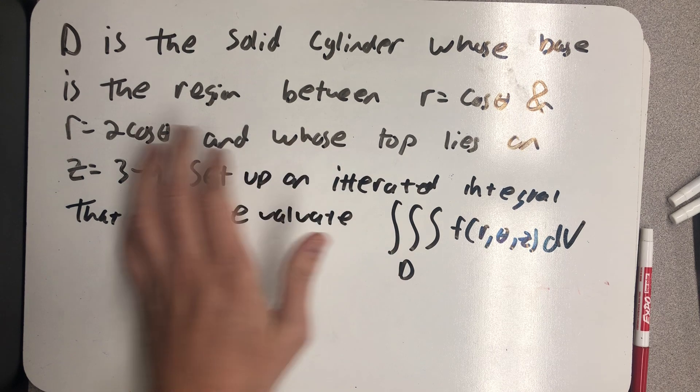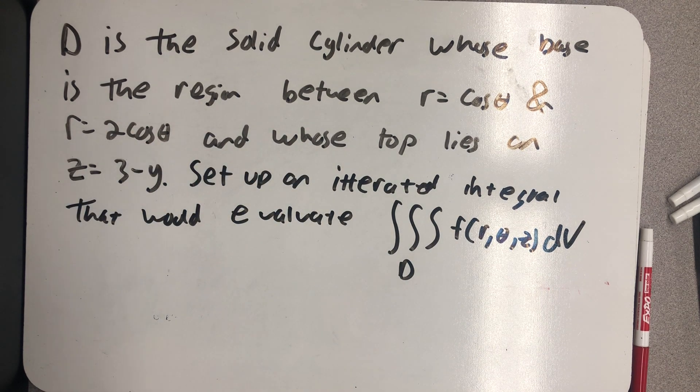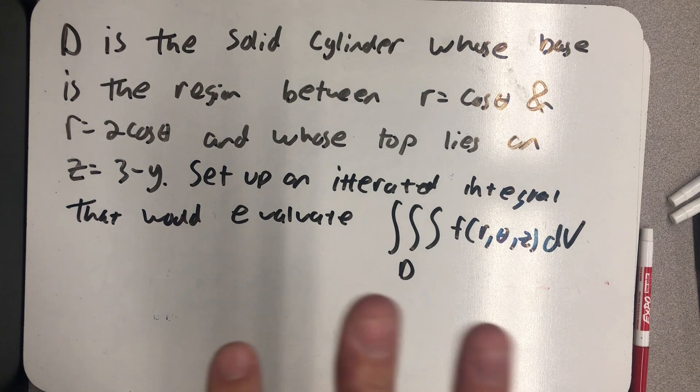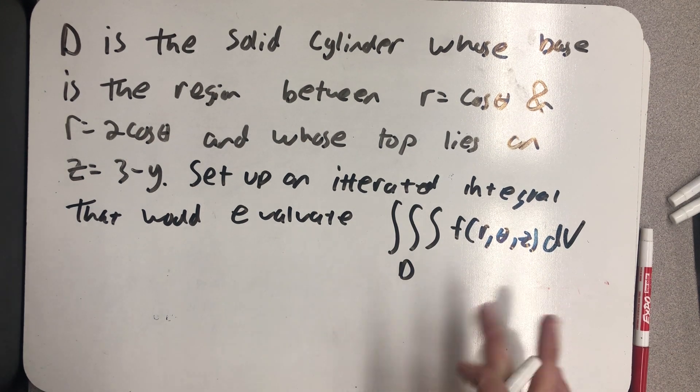r equals cosine theta and r equals 2 cosine theta, and whose top lies in the plane z equals 3 minus y. We're supposed to set up an iterated triple integral that would evaluate this.